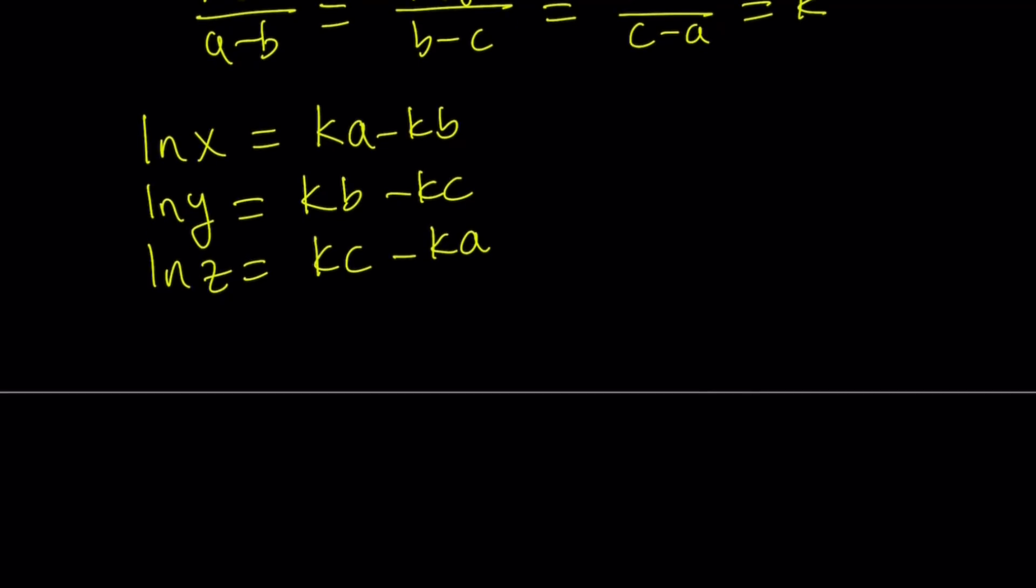And guess what? We're going to go ahead and add these together. Because we can, first of all, but that's not the main reason. When you add these up, you're going to get something nice. ln x plus ln y plus ln z on the left-hand side. And on the right-hand side, everything is going to cancel out. Ka minus ka. Kb minus kb. Kc minus kc. So it's all zero. They're just going to cancel out, leaving us with a zero on the right-hand side, which is cool.